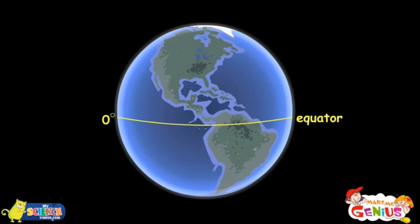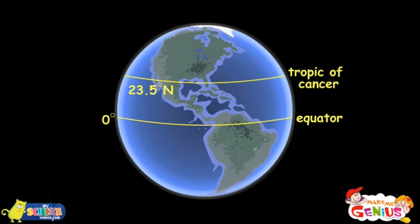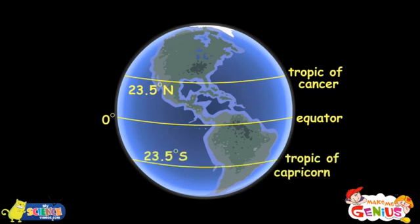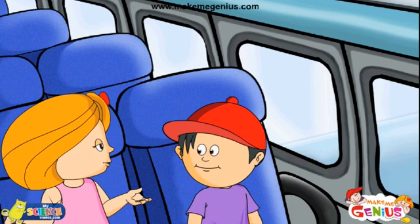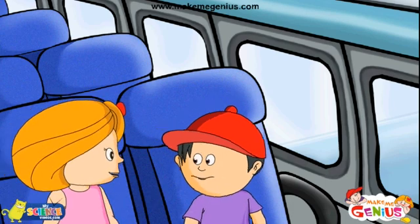The equator lies at zero degrees, halfway between the north and south poles. There are several other significant lines of latitude: the Tropic of Cancer and the Arctic Circle to the north of the equator, and the Tropic of Capricorn and the Antarctic Circle to the south of the equator.